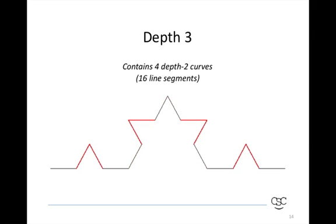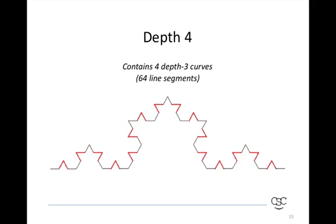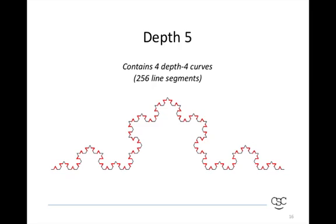Our depth 3 fractal is basically just four level 2 curves repeated in the same pattern. Likewise, our depth 4 curve contains four depth 3 curves. And then finally, depth 5 contains four depth 4 curves, or a total of 256 line segments.